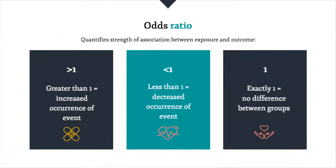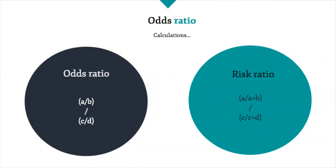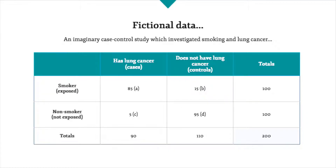In case control studies, the odds ratio is a common measure of effect in quantifying the association between an exposure and a disease. Calculating an odds ratio is quite similar to calculating the risk ratio that we looked at in the cohort studies module. We'll use the same fictional data about the relationship between smoking and lung cancer as an example. We can calculate the odds ratio by first calculating the odds of being a smoker in the group with lung cancer, then by calculating the odds of being a smoker in the group without lung cancer, and then by dividing the two odds.